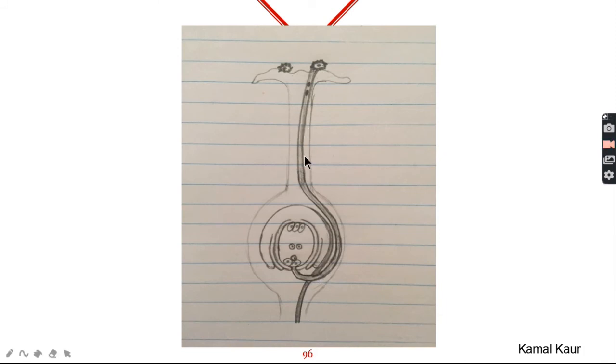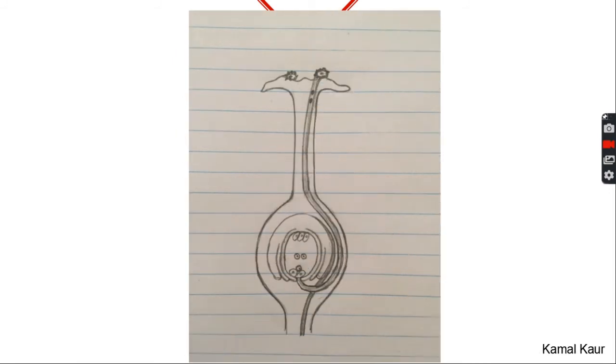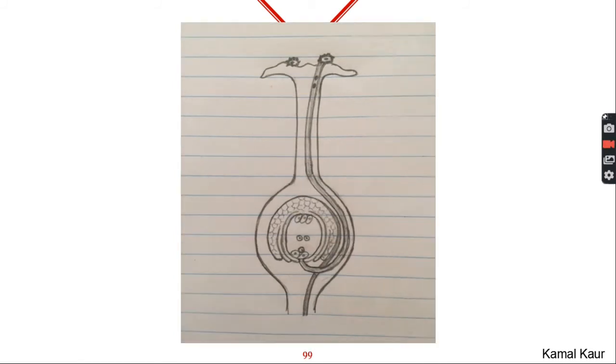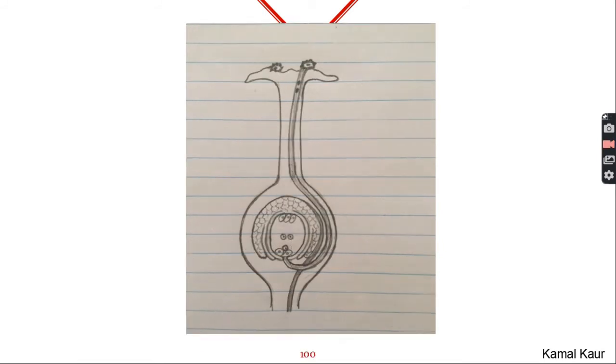Now we will shade it and outline it to make it look neater and then we will shade and outline the rest of the diagram also. Inside the integuments there are certain cells present so we will make those cells also and this part is called nucellus. Almost our diagram is complete. These two are the male nuclei which were present in the generative cell so we will make these two male nuclei and our diagram is complete.